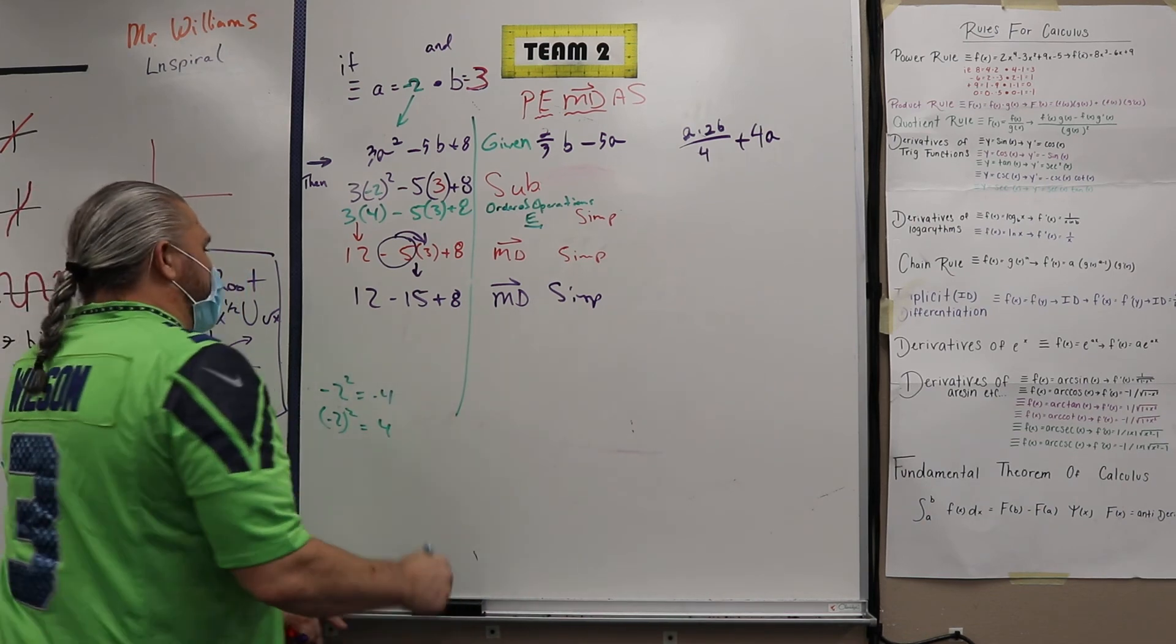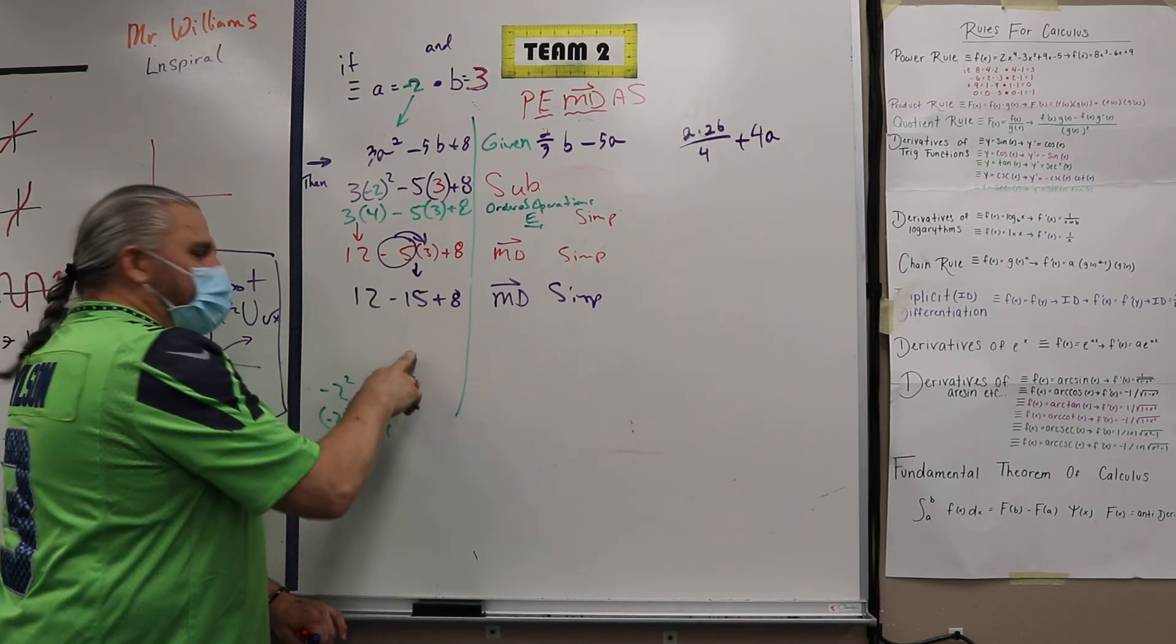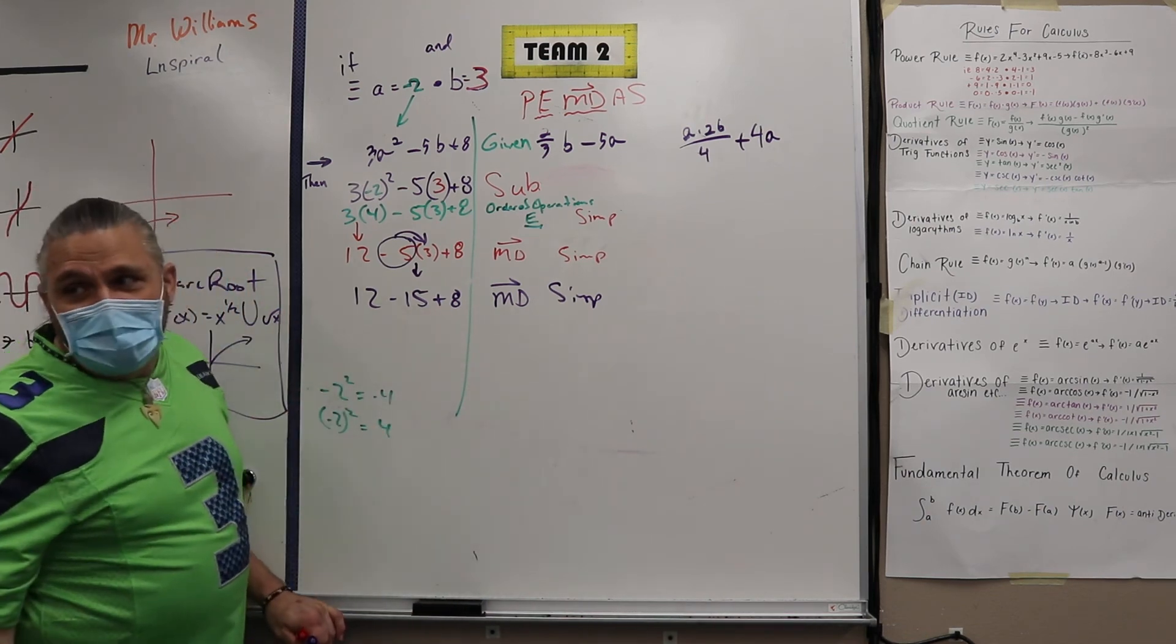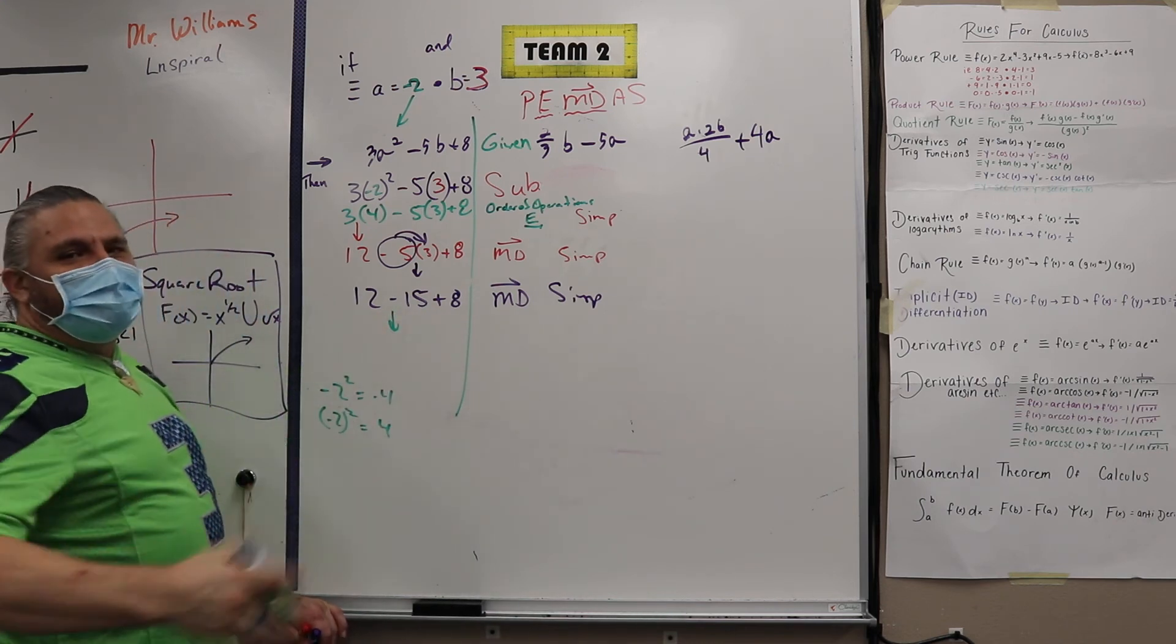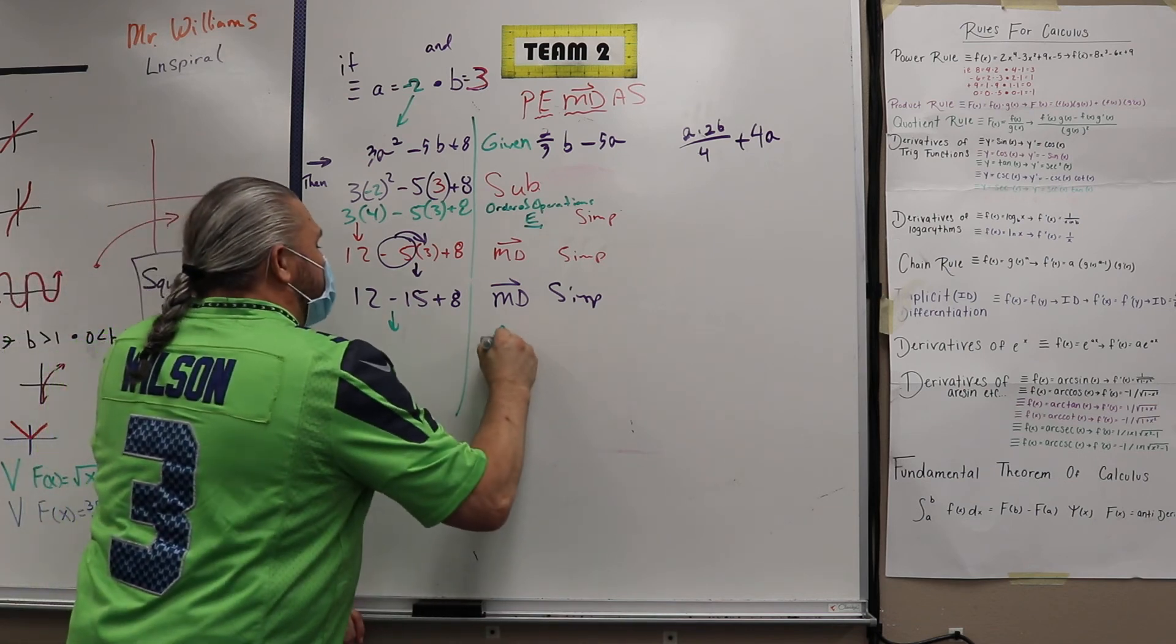Now you can combine them. Now some people will do all of them at one time. That's associative property, or commutative property. I like to just do two at a time from left to right. So addition, subtraction.